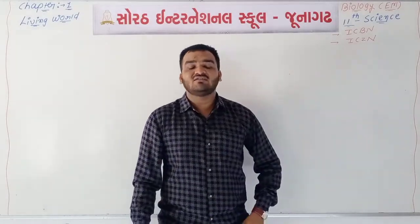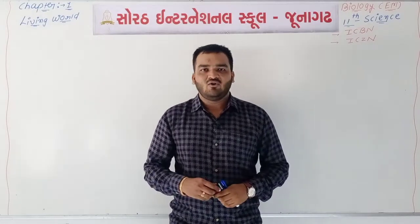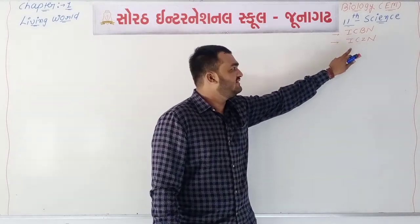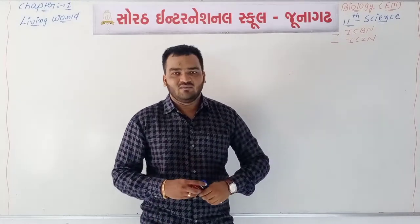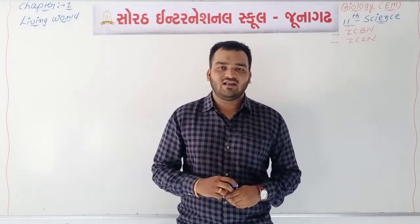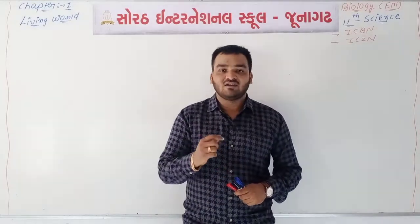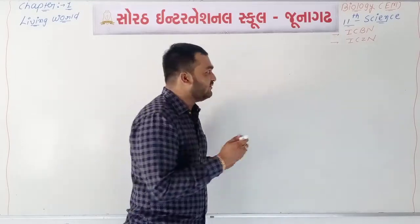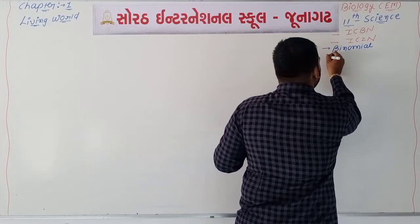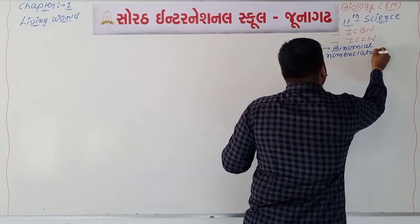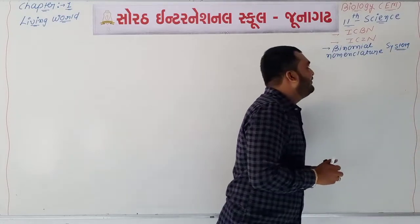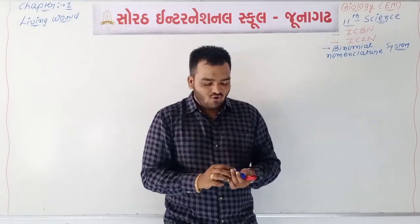ICZN, International Code for Zoological Nomenclature, creates the rules and regulations connected with animals. Different types of scientists gave different methods for the process of nomenclature. But the binomial nomenclature system was accepted by all different types of scientists.